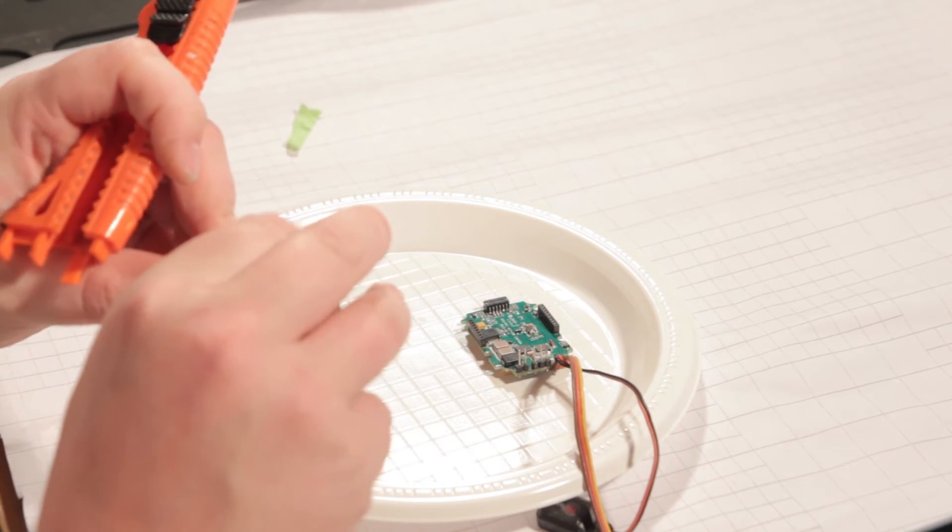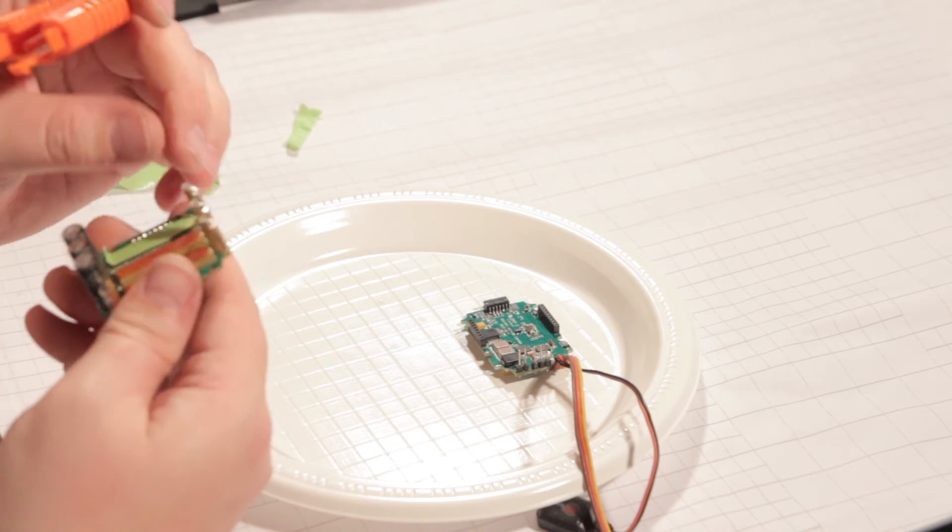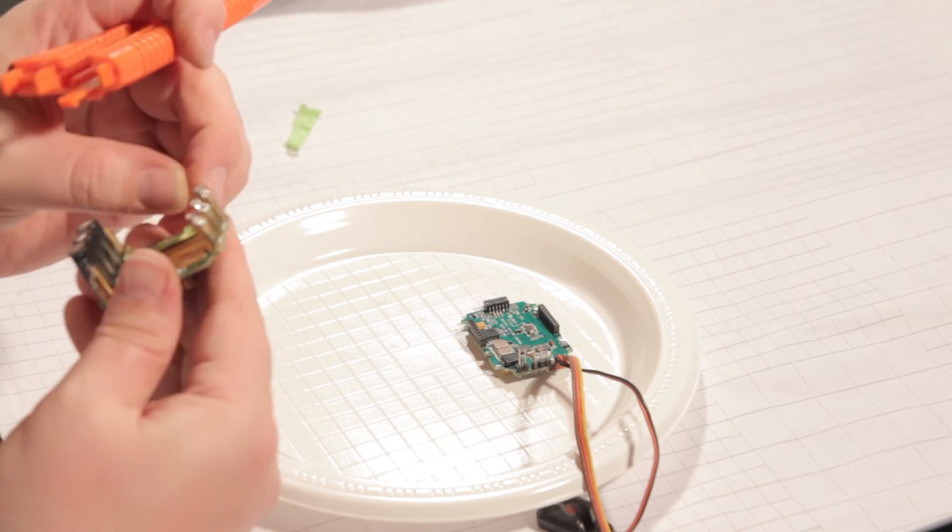So here I'm just masking off the heat transfer pads that go onto the heat sink, because I don't want conformal getting on those, but I want it all on the board and everywhere else.